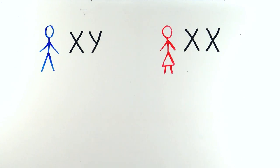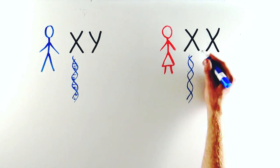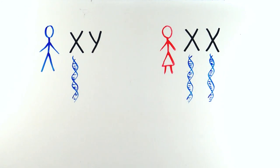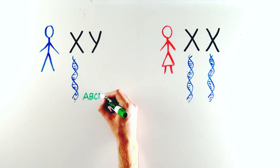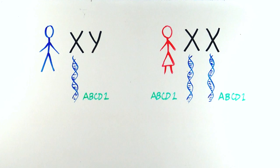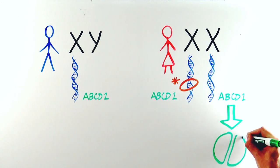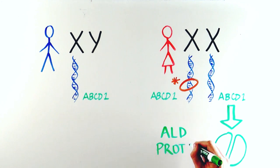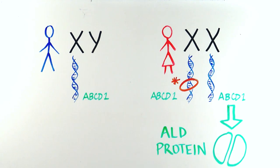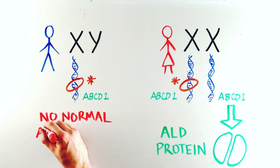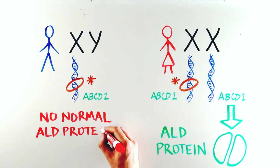That is what determines whether you are male or female. It turns out that the ABCD1 gene is located on the X chromosome. So women with a mutation in one copy of the ABCD1 gene still have a normal copy of the gene that can make a functional ALD protein. Men, however, only have one copy of the ABCD1 gene, so if this copy is mutated, there is no normal ALD protein produced.